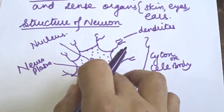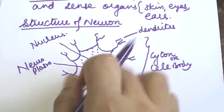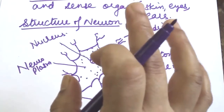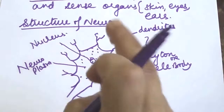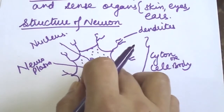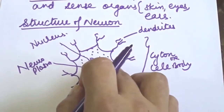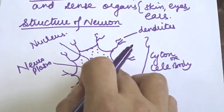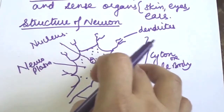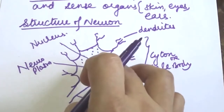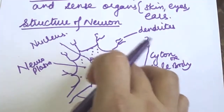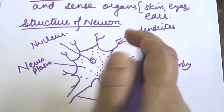The cytone contains all cell organelles except the centriole. Ribosomes and endoplasmic reticulum are grouped together inside it, forming Nissl granules.